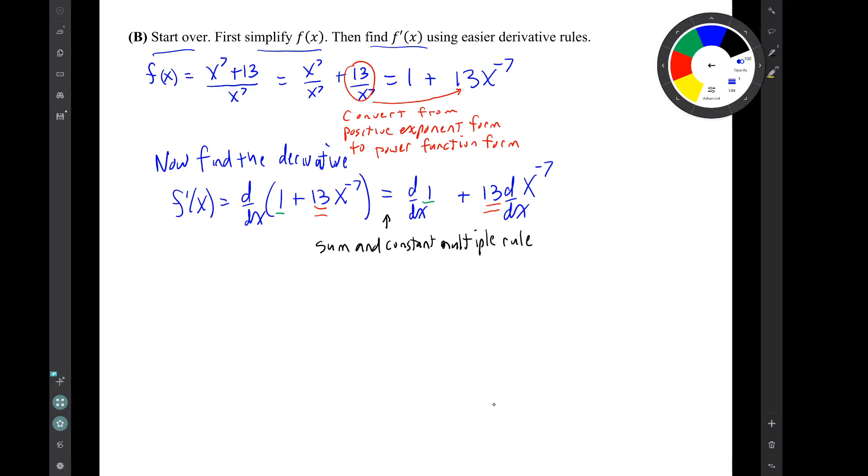So we use the power rule with n equals minus 7. Now I showed it very explicitly because I wanted to make sure that we did the exponent carefully. The exponent is going to be minus 7 minus 1. I wanted to write that down and then do it in the next step.